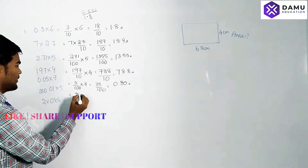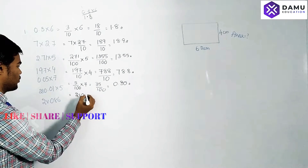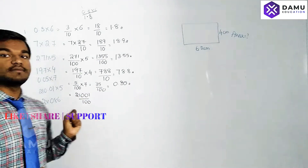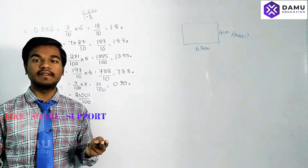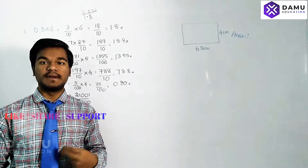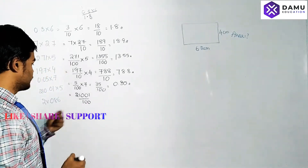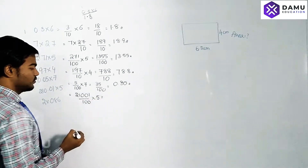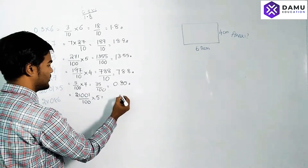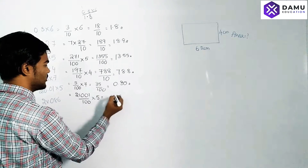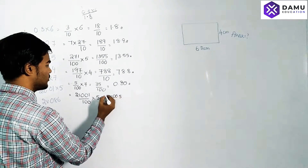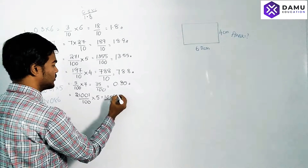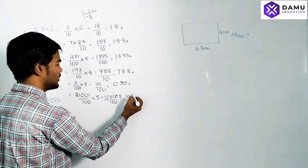Next: 0.01 into 5. After the decimal point two places are occupied, so it becomes 1 by 100 into 5. Multiplying: 5 ones are 5, giving 5 by 100. Leaving two places from the right side, the answer is 0.05.